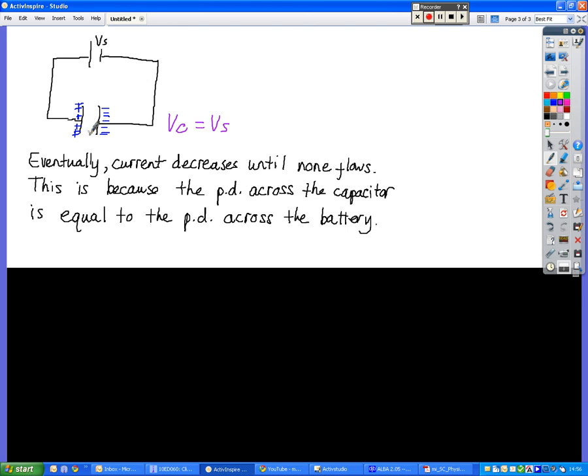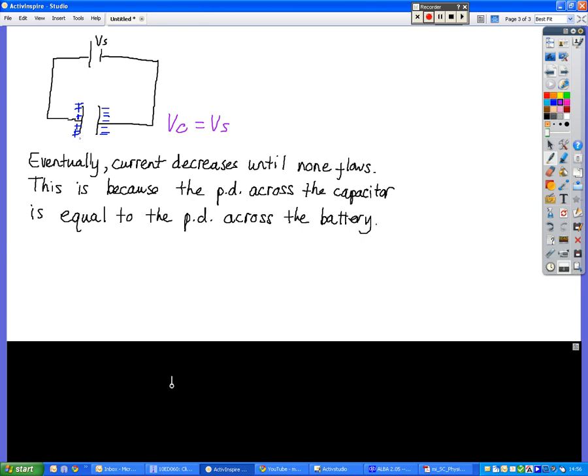But because we've got a major charge difference across here, we have the maximum potential difference possible, which is the voltage across the capacitor being equal to the voltage of the supply.